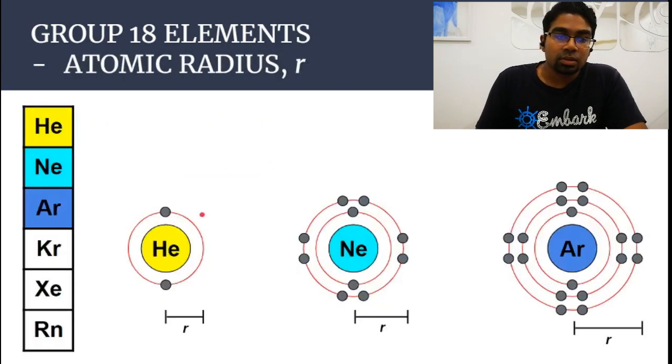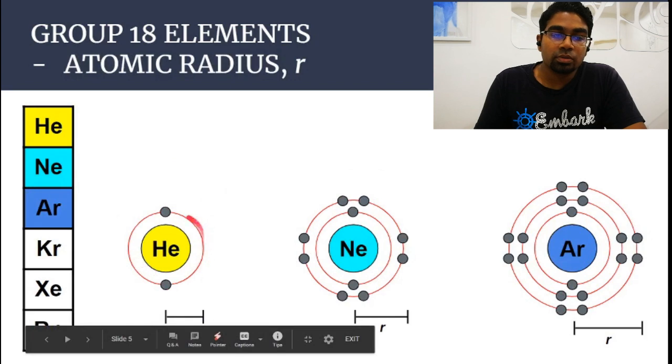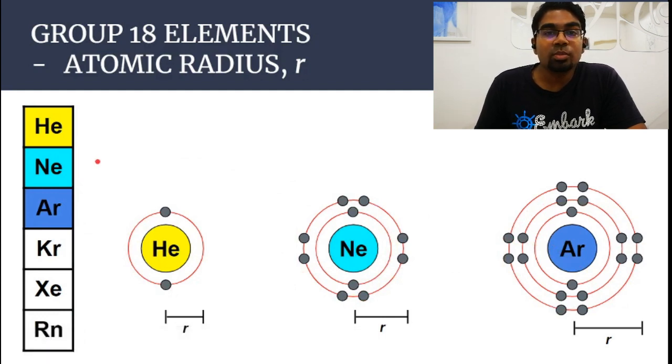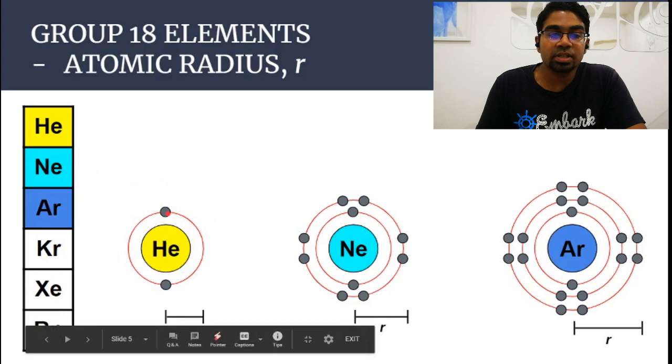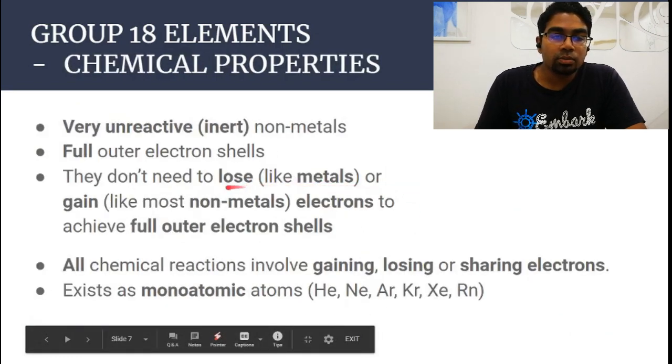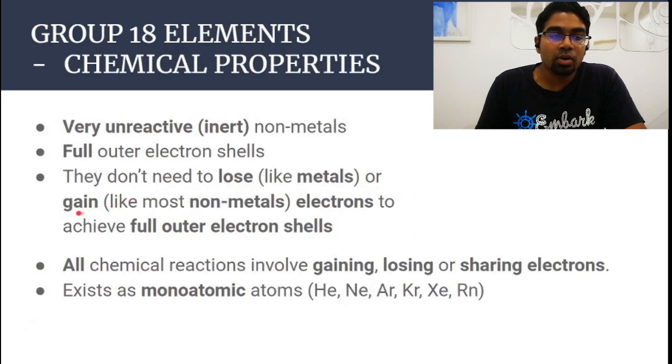They are stable because they have full outer electron shells. The outer shell is full. For the first shell, helium, the maximum number of electrons will be two, so this is considered stable. For the second shell is eight, for the third shell everything else will be eight. Remember we are talking about the outermost shell. So helium will be two considered as full, neon, argon, krypton, xenon, radon will be eight.